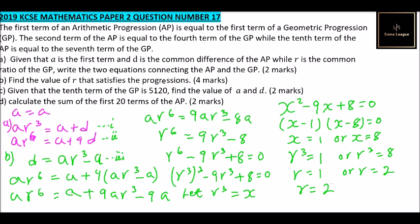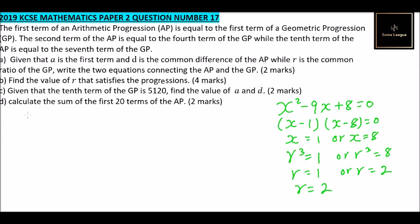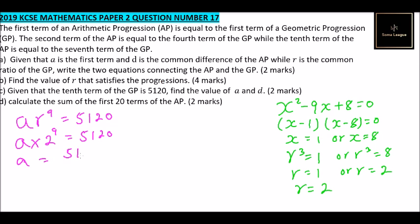Given that the tenth term of the GP is 5,120, we write the nth term formula: a·r⁹ = 5,120. We have found r = 2, so a × 2⁹ = 5,120. Therefore a = 5,120 ÷ 2⁹. Using a calculator, 2⁹ = 512, so a = 5,120 ÷ 512 = 10. Therefore a = 10.